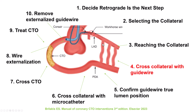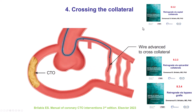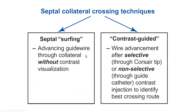Once we get the microcatheter inside the collateral or the bypass graft, the next step — step number four — is to cross the collateral with a guidewire. There are different ways to do this depending on the type of collateral. If it's a septal collateral, we have a surfing or a contrast-guided option. If it's a bypass graft or epicardial collateral, we do not do surfing but just go with contrast guidance. For septal collaterals specifically, advancing a guidewire blindly with rapid rotation without contrast visualization can sometimes — quite often, actually — be successful in crossing.